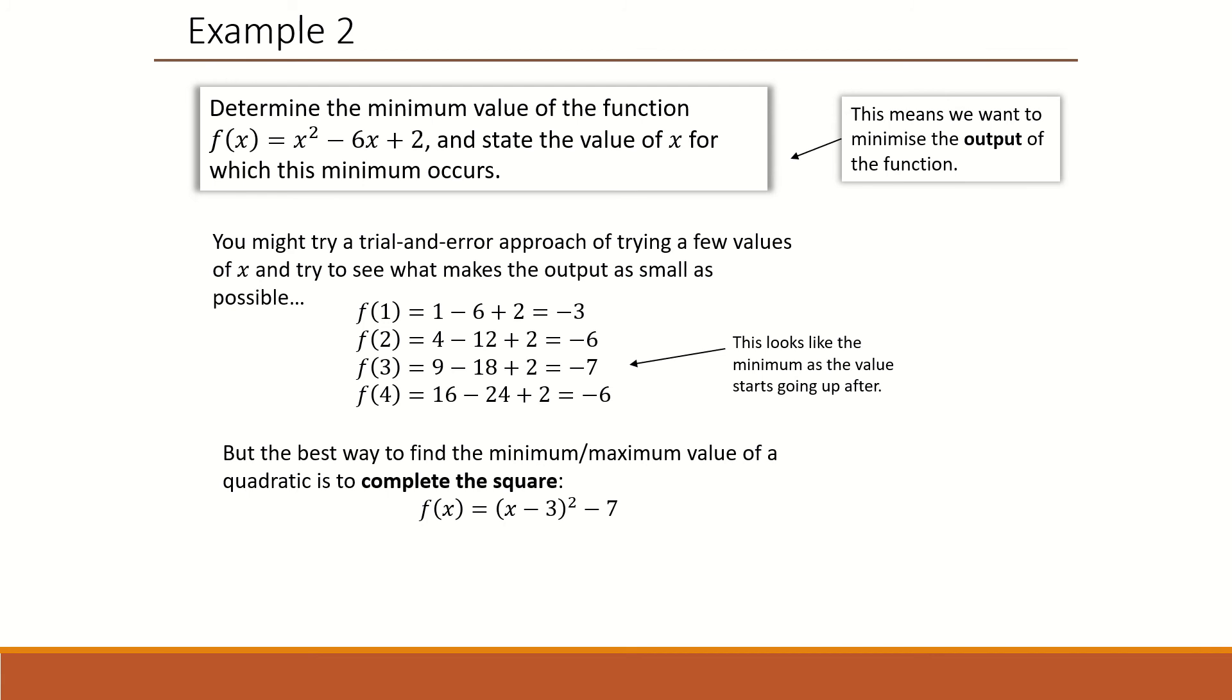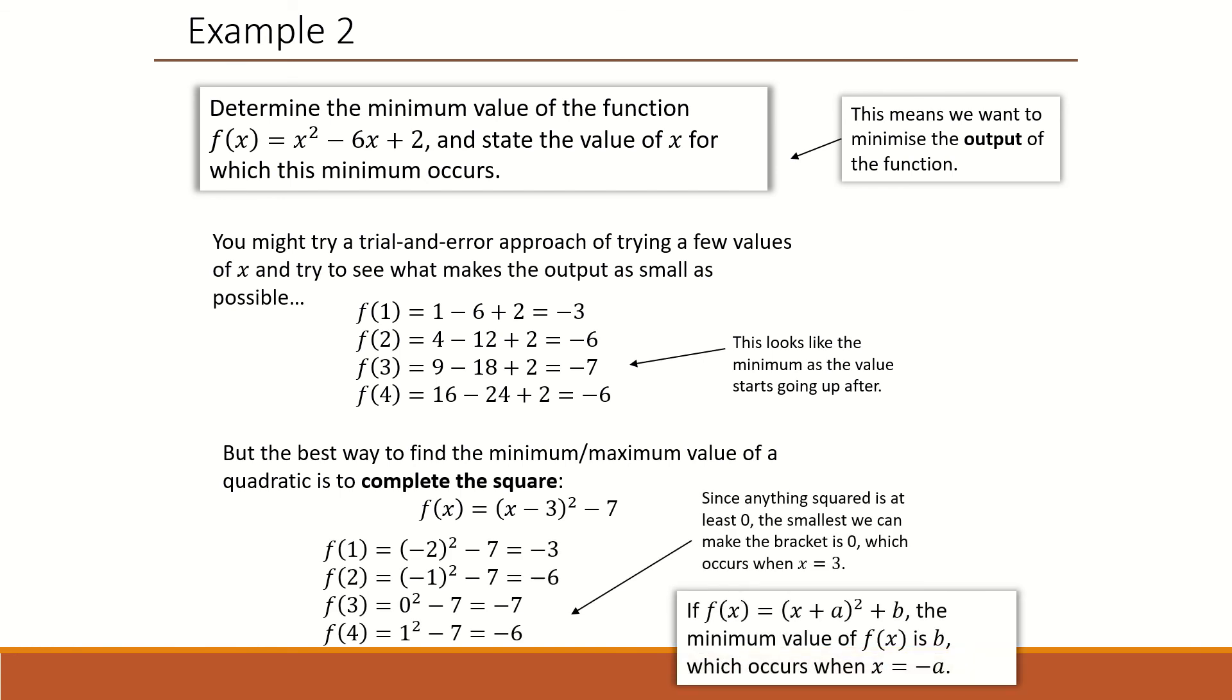And to find the minimum should be where the turning point is, which is 3 minus 7.